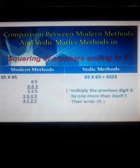65 into 65. See the first digit is 6. Now you will multiply 6 with a number 1 greater than it, that is 7. So 6 into 7 is 42. It is written 42 there. Next step is 5 into 5, that is 25. So 4225 is the answer.